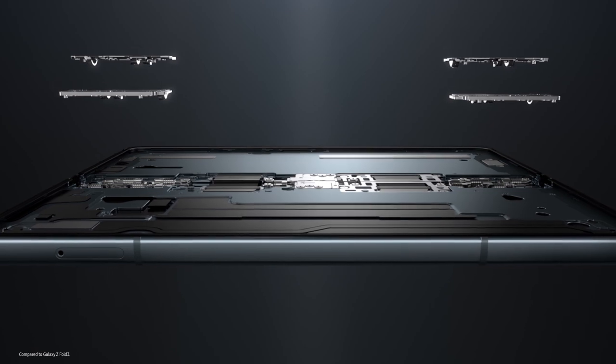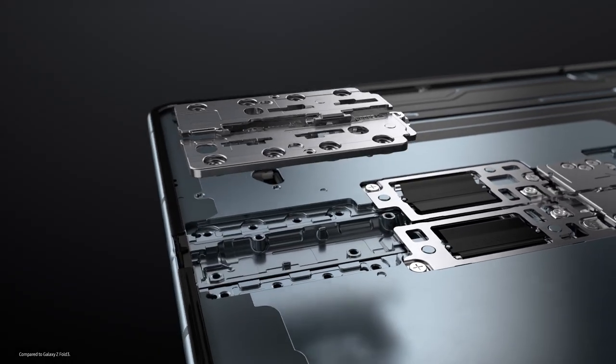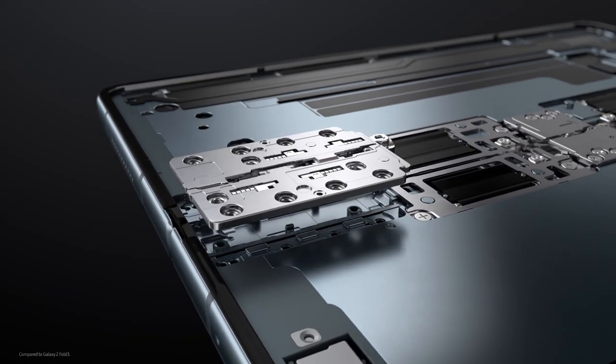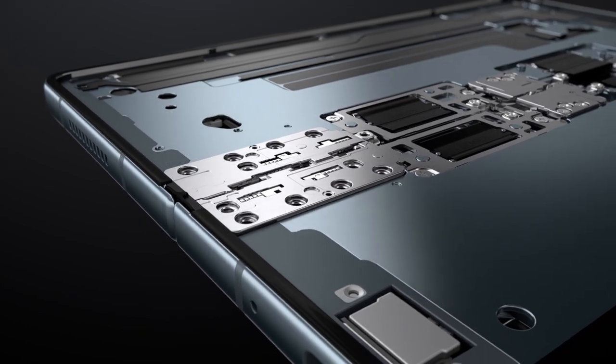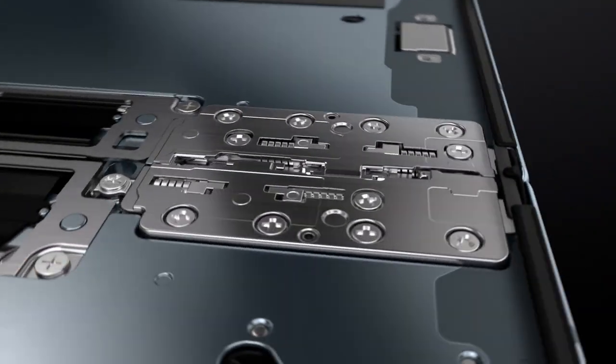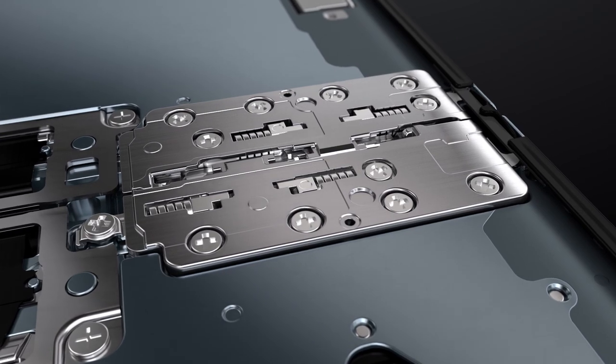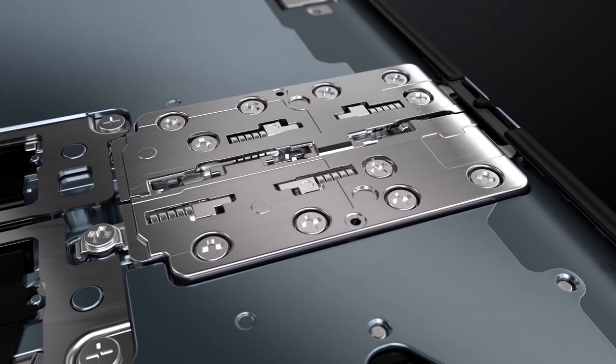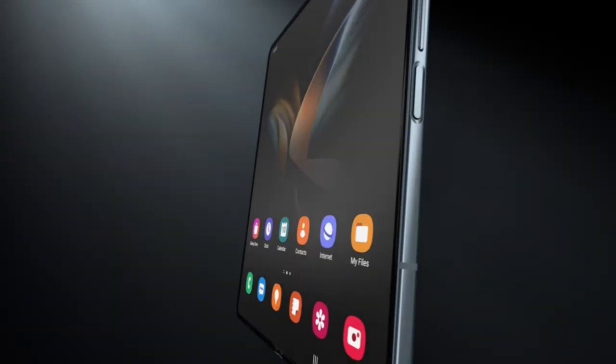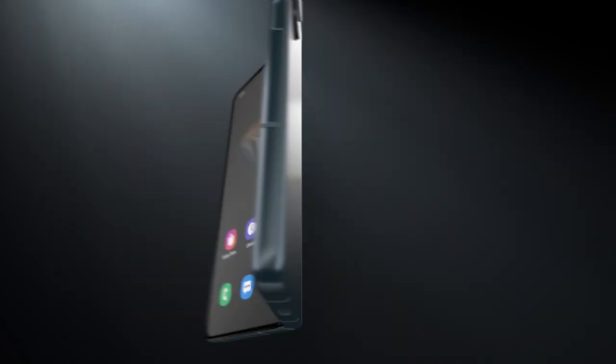This change allowed us to slim down the Fold 4's hinge, making it lighter overall. And even with major reductions in weight and size, this newly designed hinge is just as durable as the original gear-based construction, resulting in the slimmest and lightest hinge for our fold yet.